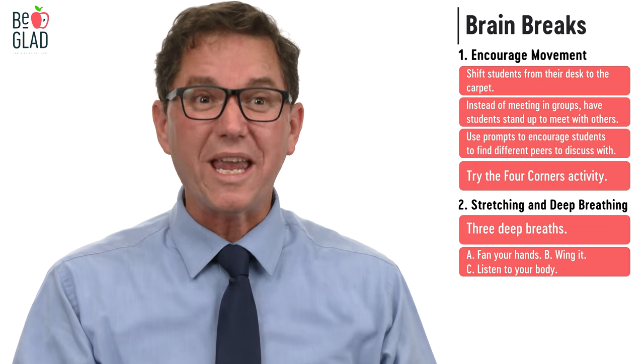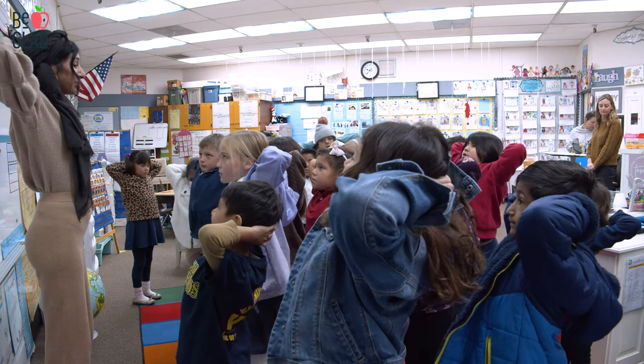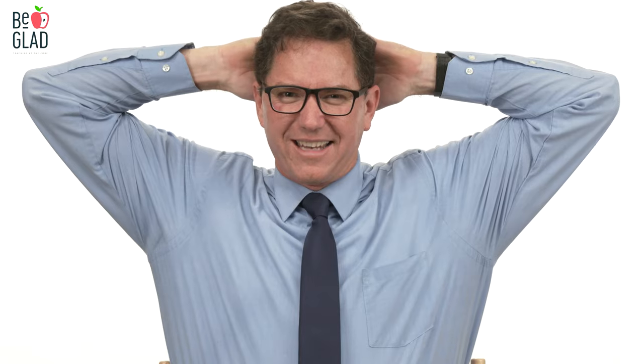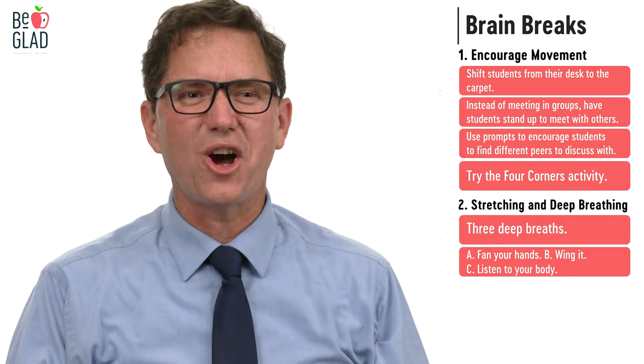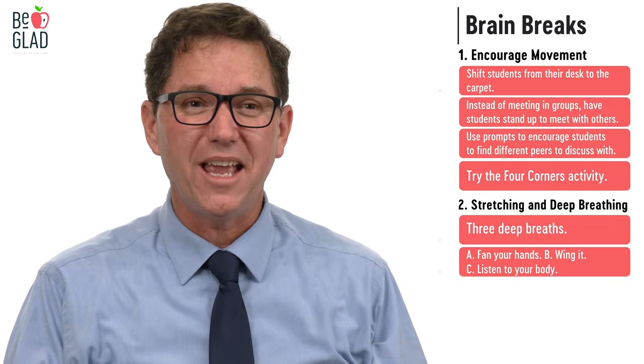Do this one with me as you take a nice deep breath. The second stretch is called 'wing it' — put your hands behind your head and stretch your elbows back, take a nice deep breath in and out as you stretch. The third one is called 'listen to your body' — bring your ear down to your shoulder on one side, take a nice deep breath, then move to the other side and do the same thing.